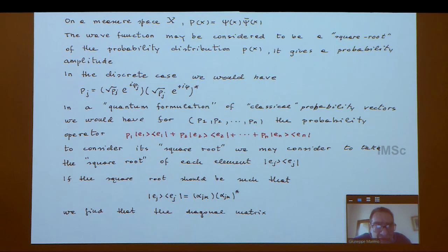Usually we have on any measured space, if you take the wave function, you construct a probability measure. In discrete cases, you have the square root of the probability in terms of an amplitude and a phase. But if you consider a quantum formulation of classical probability vectors, you would associate with every probability vector the operator you see here.